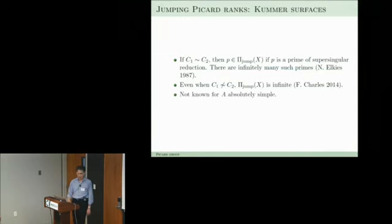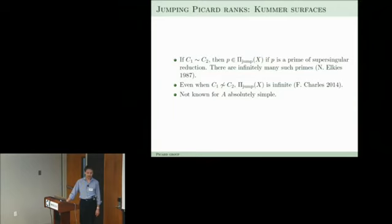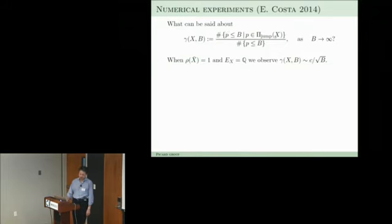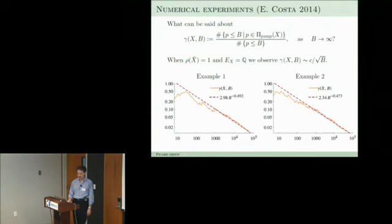If the abelian surface is absolutely simple — not isogenous to a product of two elliptic curves — then we still don't have a theorem about jumping primes; I think this is the next case that could be addressed. If we don't know this in theory, we can look at what happens in practice by examining the proportion of jumping primes: take all primes up to a bound and see what fraction are jumping primes.